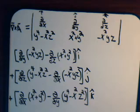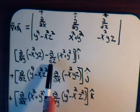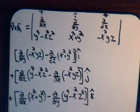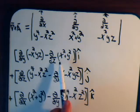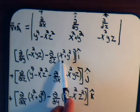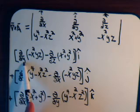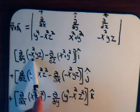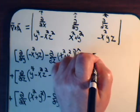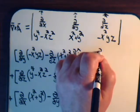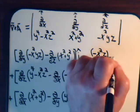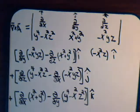Where taking the curl differs from taking the cross product is that we have to evaluate these partial differentials to determine the i, j, and k components of the curl vector. For the i component: taking the partial with respect to z — since we have x and y terms only — gives 0. Taking the partial with respect to y gives −x²z. So the i-th component of the curl is −x²z.